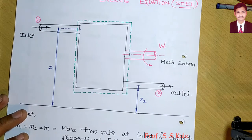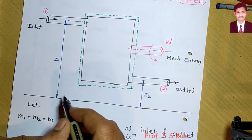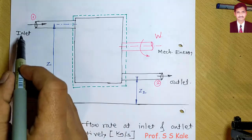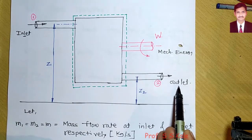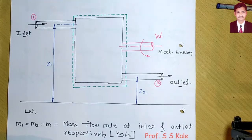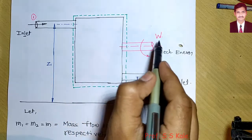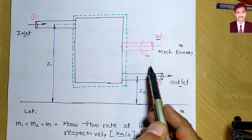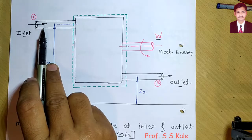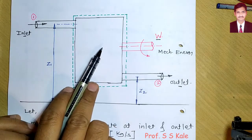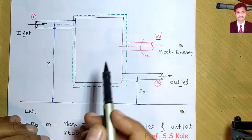Let's understand the flow process. A flow process is one in which the fluid is flowing — it is not constant. Some fluid is coming inside at the inlet and some fluid is going outside at the outlet. The fluid comes inside, does some process, and we get mechanical work as output.